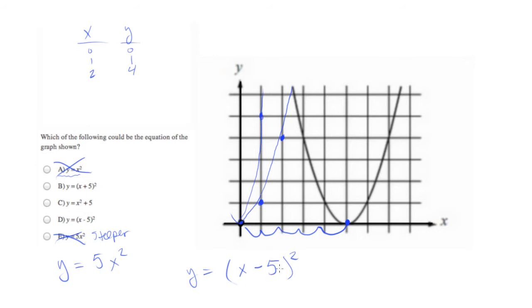And this is something you simply need to memorize if you want to use the technique of building functions, which is what I recommend. So subtracting something moves it to the right. So we want x minus five squared. And that's going to give us answer choice D, which will be the right answer.